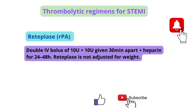Reteplase: double IV bolus of 10 units plus 10 units given 30 minutes apart, plus heparin for 24–48 hours. Reteplase is not adjusted for weight.